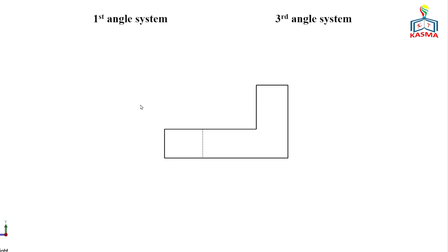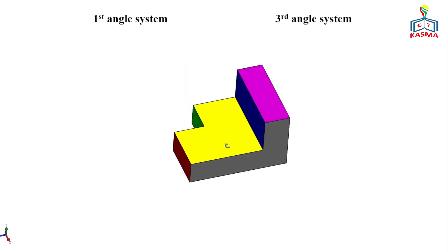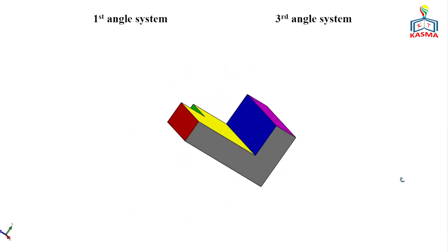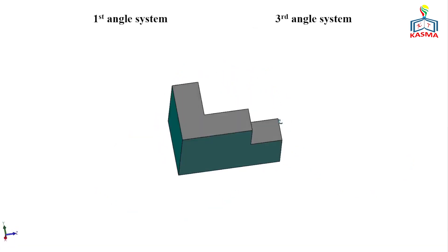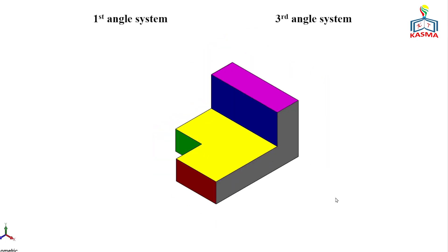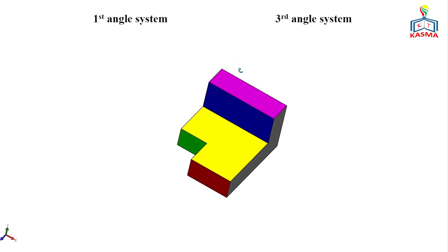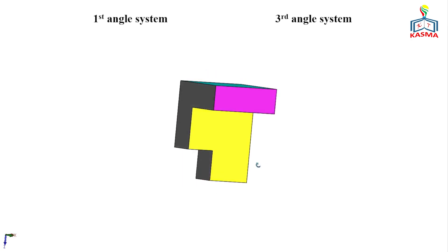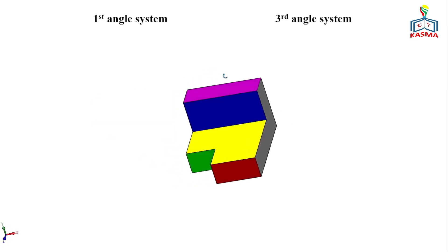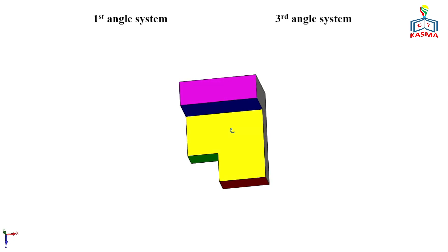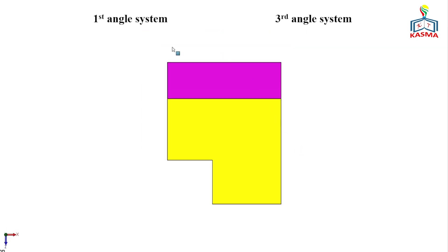Due to line precedence, object lines take priority, so only the visible vertical line is projected. When looking at the object from the right side, we get that shape. And when looking from the top — emitting light from the top — we see the object's dimension as two surfaces. I hope you understand the views from different directions.